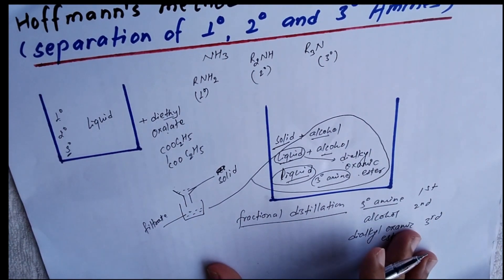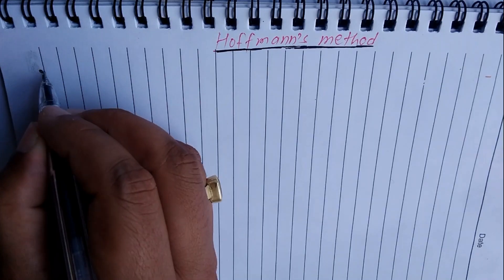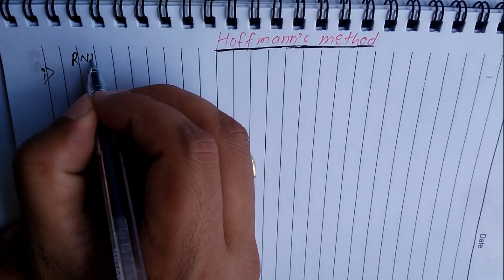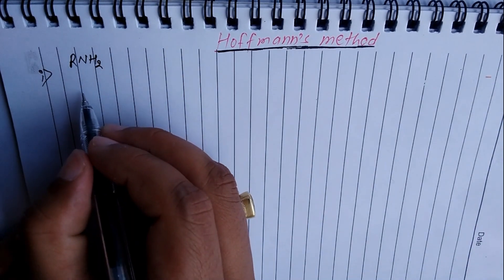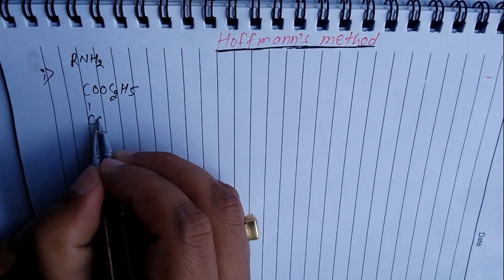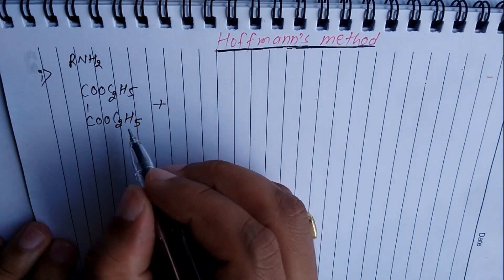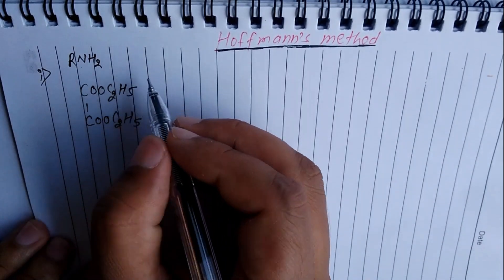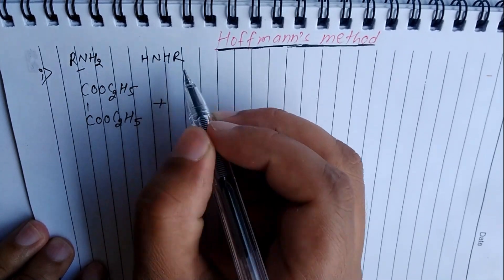Now let us see the chemical reactions involved in this separation method. For the primary amine: R-NH2 reacts with diethyl oxalate, whose molecular formula is C(O)-OC2H5 and C(O)-OC2H5. Two moles of primary amine are used in this reaction.